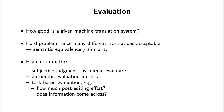We could look at subjective judgments by human evaluators — this is typically what we mean when we talk about manual evaluation. There are also automatic evaluation metrics: metrics that can take a translation and its reference and provide a number saying how good is this sentence, or how good is the output of a system. Those are the two primary types of metrics: manual evaluation metrics and automatic evaluation metrics. But there are others that could be considered, such as task-based evaluation.